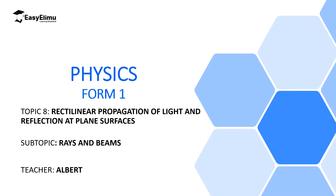Welcome to ECLUMU Learning Simplified and welcome to this lesson. In the previous lesson we were discussing the introduction to rectilinear propagation of light, where we said light has a property of traveling in a straight line.